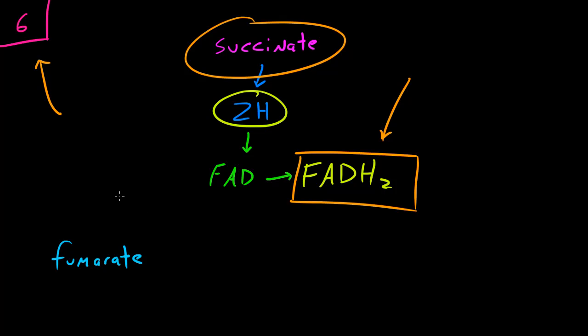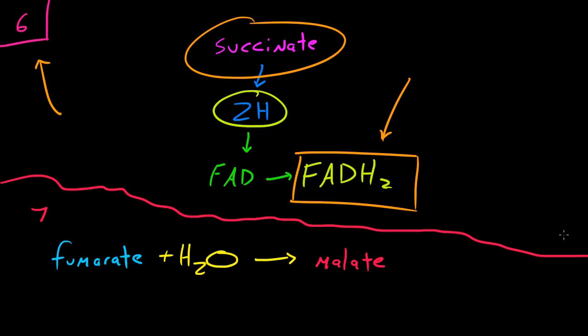But I'm not going to change my slide for step number seven because step number seven is incredibly easy. All you do for step number seven is you add a water molecule to fumarate, and it actually makes a brand new molecule called malate.